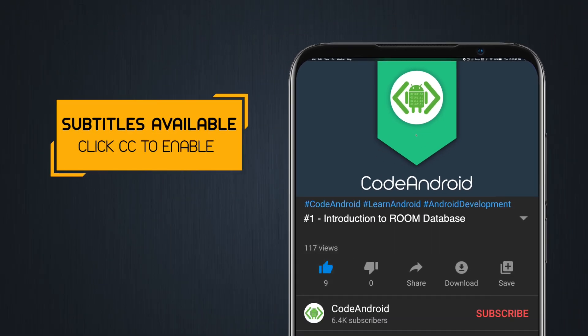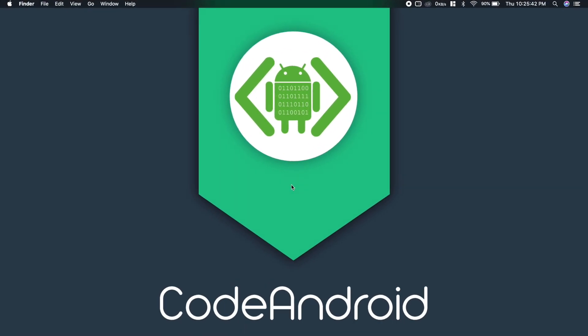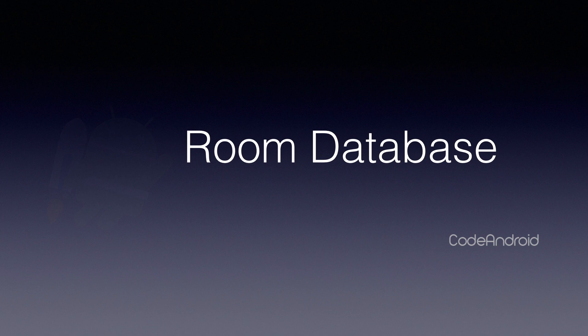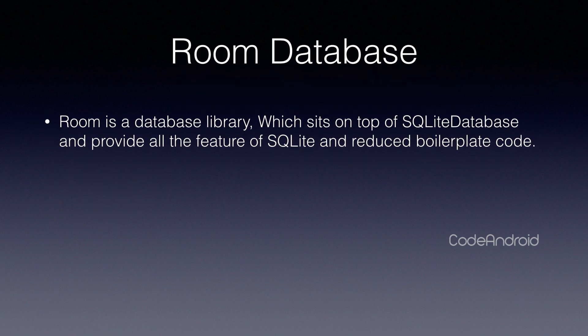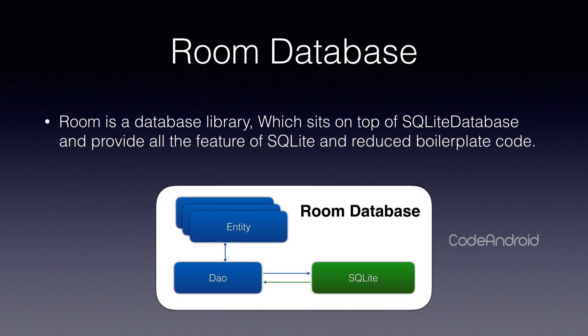Hey guys, it's Vignesh from Code Android. In this video, we'll see about Room Database. Room is a Jetpack library which sits on top of SQLite database and provides all the features of SQLite. At the same time, it allows you to access the data without much code.